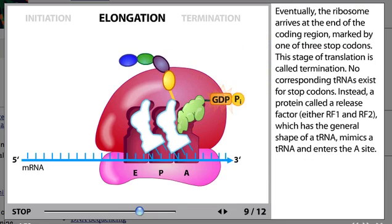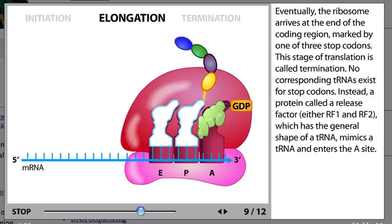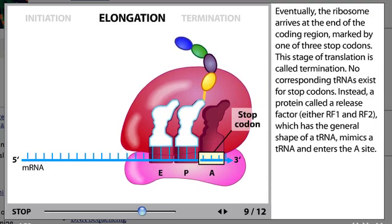Eventually, the ribosome arrives at the end of the coding region marked by one of three stop codons. This stage of translation is called termination. No corresponding tRNAs exist for stop codons.